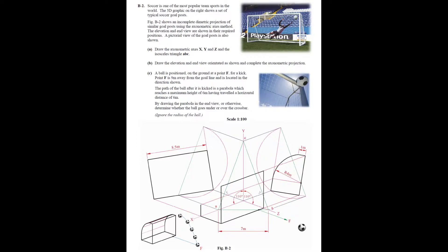A ball is positioned on the ground at point F. For a kick, point F is 9 metres away from the goal line and is located in the direction shown. The path of the ball after it is kicked is a parabola which reaches a maximum height of 6 metres, having travelled a horizontal distance of 6 metres. By drawing the parabola in the end view, determine whether the ball goes under or over the crossbar. Ignore the radius of the ball. Scale for this question is 1 to 100.